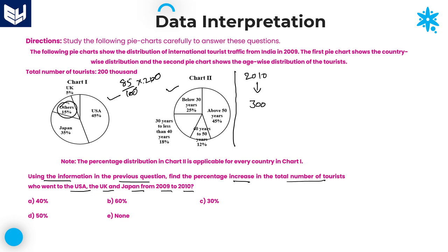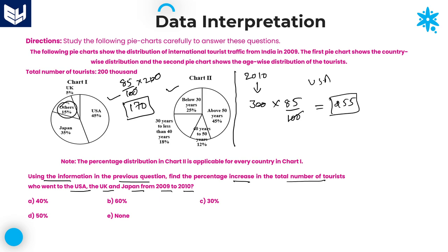85% gives 170,000 in 2009. Coming to 2010, against 85% — no change in percentage, but total is 300,000. Two zeros cancel, giving 85 × 3 = 255. So in 2010, USA + UK + Japan together is 255,000. Whereas in 2009, the value is 170,000.